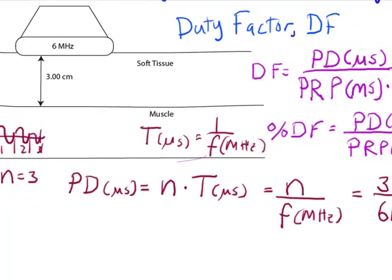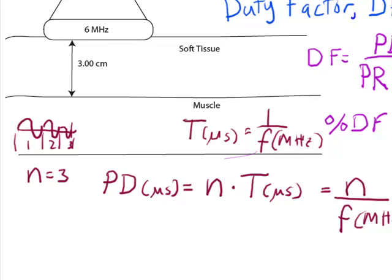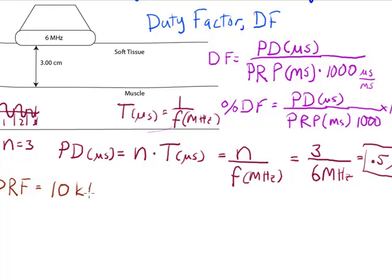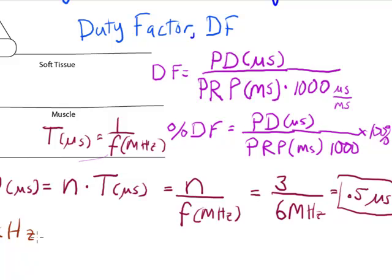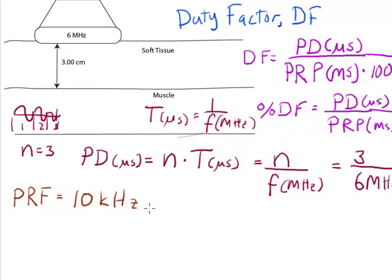Next I have a pulse repetition period. Usually we have the pulse repetition frequency, so let's say we have a pulse repetition frequency of 10 kilohertz. It's generating pulses 10,000 times per second. To get the pulse repetition period, remember period is one over frequency, so that's one over the pulse repetition frequency, which I said was 10 kilohertz.